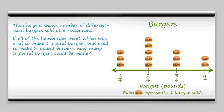OK. So first, let's look at how many 1 pound burgers we have. And it's 2. So we have a total of 2 pounds of hamburger meat. Now, I want to separate that into groups of 1/4 pounds. So when I have a total and I separate it into equal size groups, that is division.